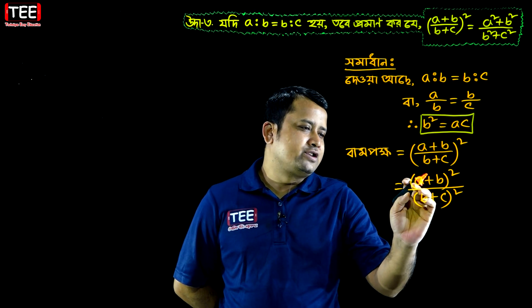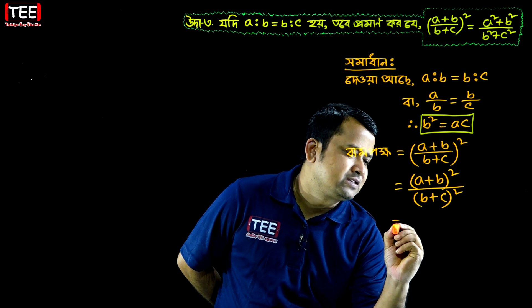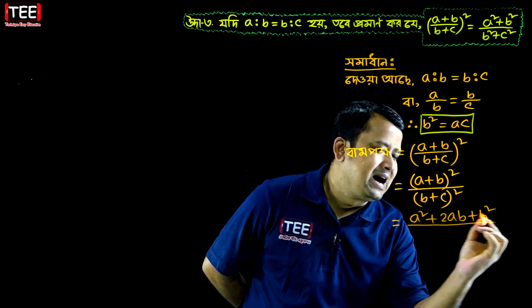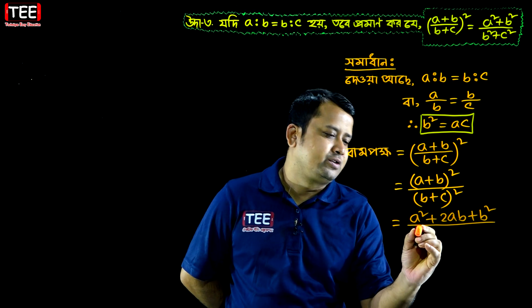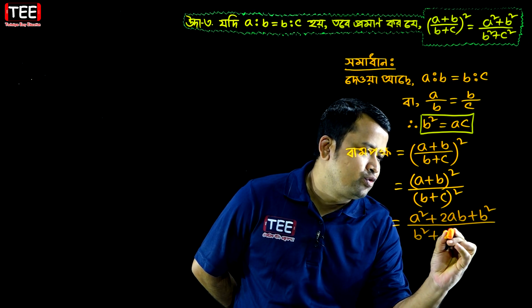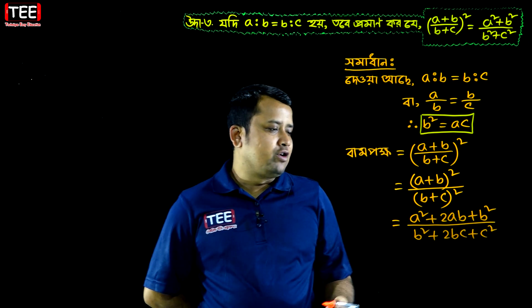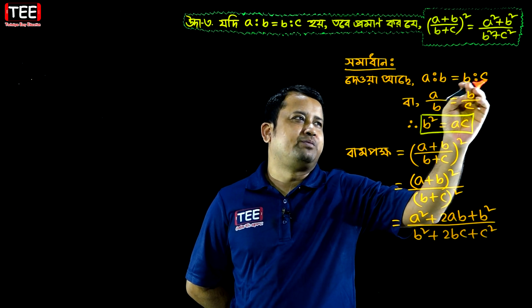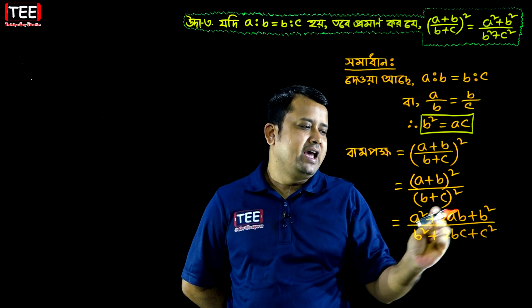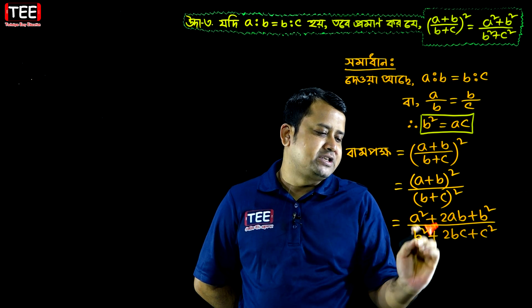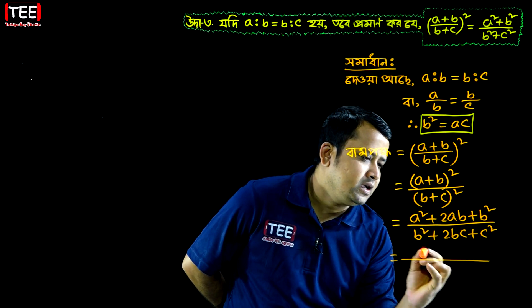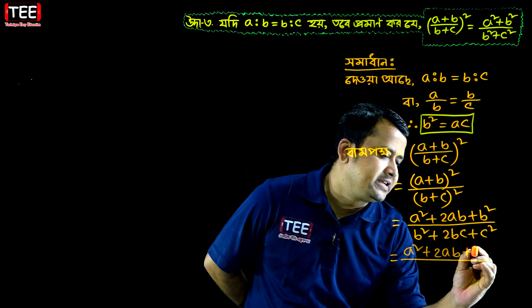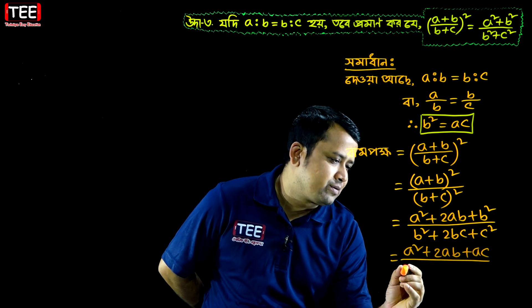A plus B whole square, which is A square plus 2AB plus B square. Now, B square equal to AC. A square equal to A square plus 2AB plus B square.